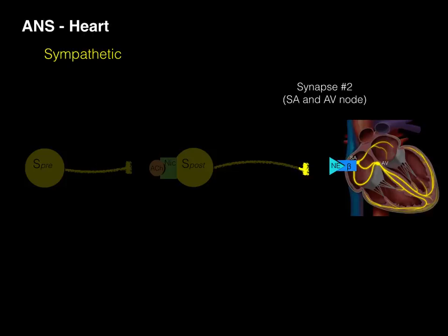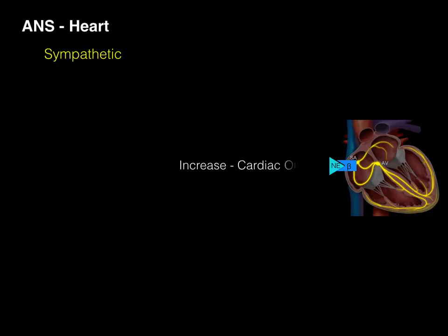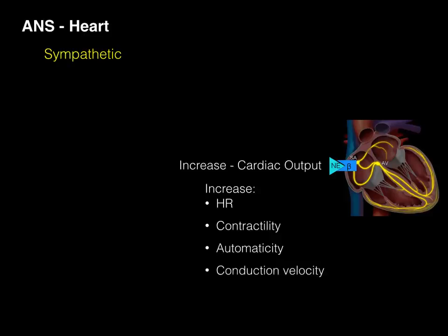This is now where the SA and the AV node are located. When this occurs, it's going to increase the cardiac output. How does it do that? It increases the heart rate, increases contractility, automaticity, and conduction velocity. All of those things are what norepinephrine is going to cause. The take-home message is this: beta-1 receptor activation — and it's beta-1 specifically — increases cardiac output. Our second thing we'll talk about now is the parasympathetic innervation.